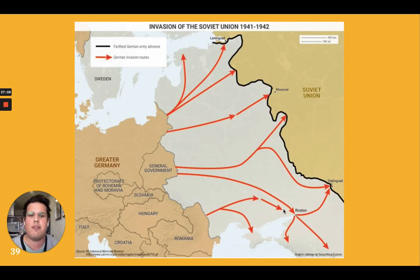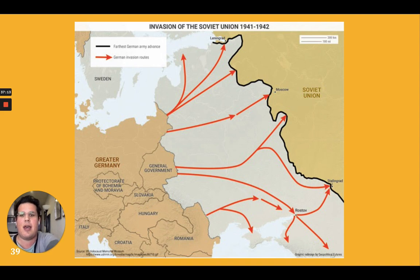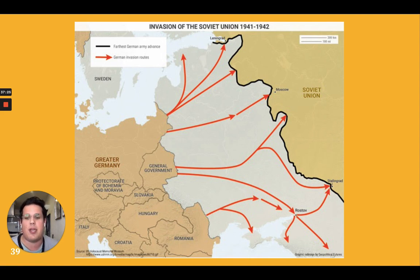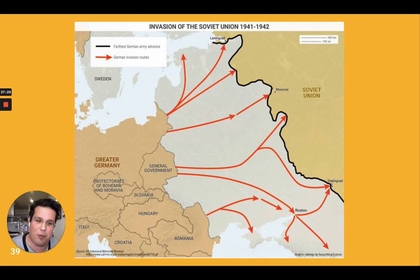In this map we can see the invasion of the Soviet Union at the hands of the Nazis, and how the German invasion routes go all the way to Moscow and Leningrad. However, because of the geographic situation of the Soviet Union this became impossible, and obviously the intervention of the US helped a lot.